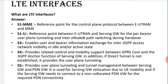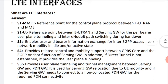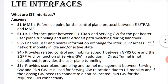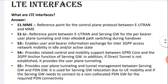The first one is the S1-MME interface — that is the most important LTE interface. This is a reference point for the control plane between eNodeB and MME. This is the protocol between E-UTRAN and MME. If you know what E-UTRAN or MME is, then you can understand this easily. We have already explained about E-UTRAN and MME in the previous video. Before going through the LTE interfaces, you should go through the LTE architecture to understand where each element connects.